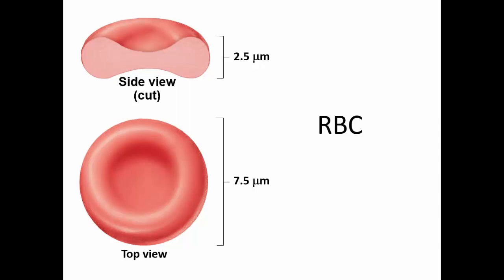The red blood cell is a biconcave disc — caved in on both sides. This gives it the ability to be pretty flexible. It does not have a nucleus, so it's not a true cell and will not undergo any cell division once it leaves the bone marrow. This flexibility is what allows red blood cells to slip through tiny capillaries.